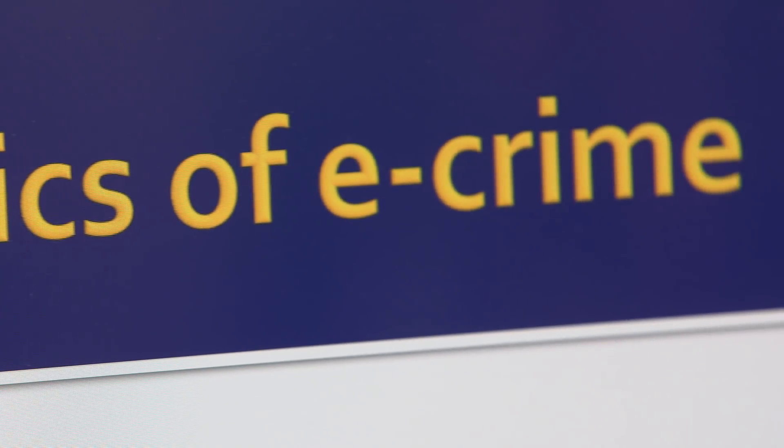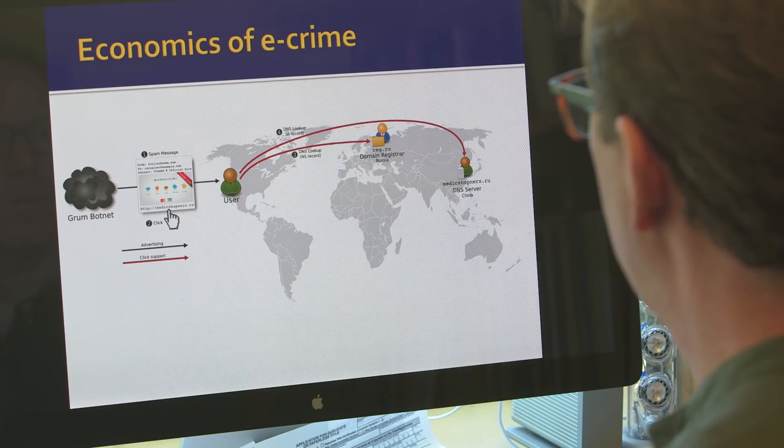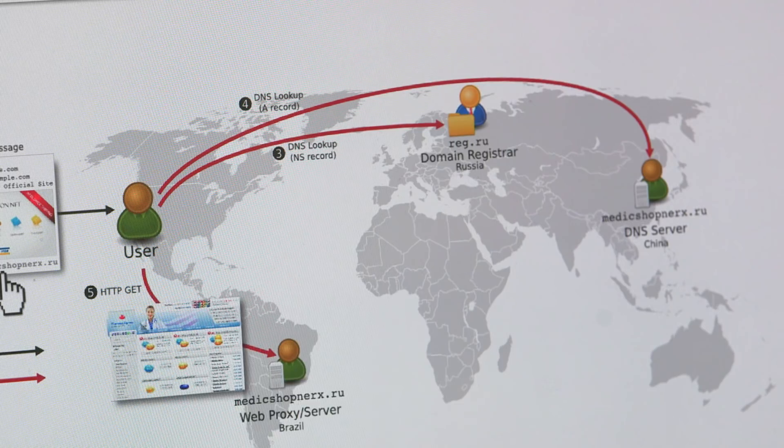Instead of focusing on how do we block the emails, we focused on how do we block the profitability, how do we keep them from making money sending spam. So as we measured all of this spam, what we found ourselves interested in is where the choke points in the business model.